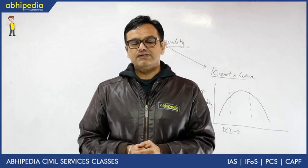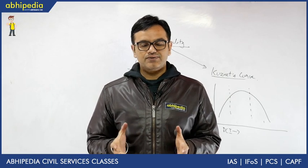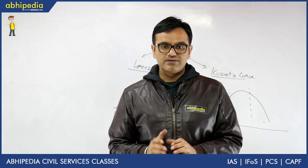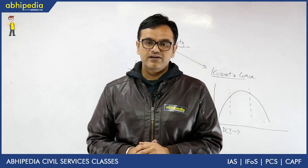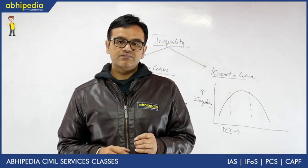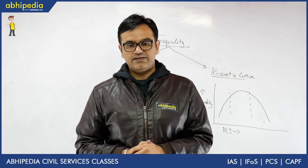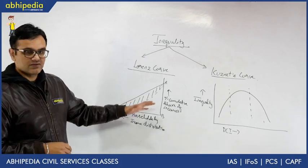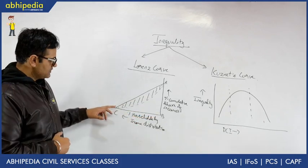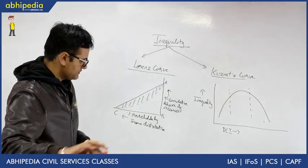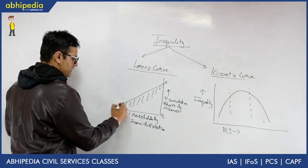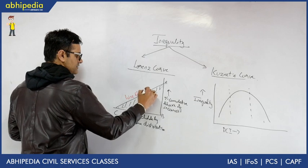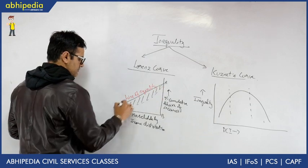Now this Lorenz Curve and Kuznets Curve are basic concepts which are talked about in NCERT also. The Lorenz Curve helps in determining the inequality in distribution of wealth within the society. Within the Lorenz Curve, this straight line is called the line of equality, which is at a 45 degree angle with the base.